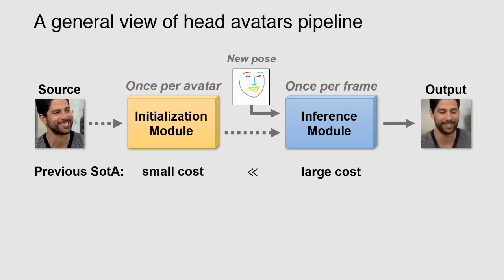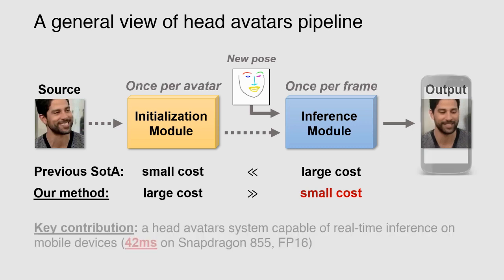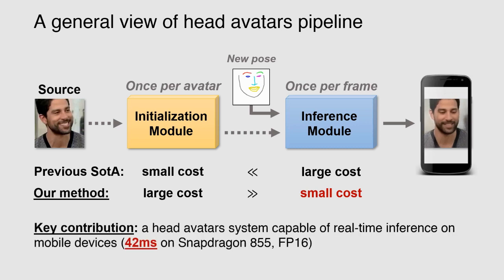This trade-off is unfavorable in real applications since an increased inference cost introduces extra latency into the system. In our work, we instead propose to increase quality at the expense of the initialization cost. This allows us to achieve better output quality and inference speed than the state-of-the-art for a fixed computational budget and even opens the possibility to run such models on mobile devices.